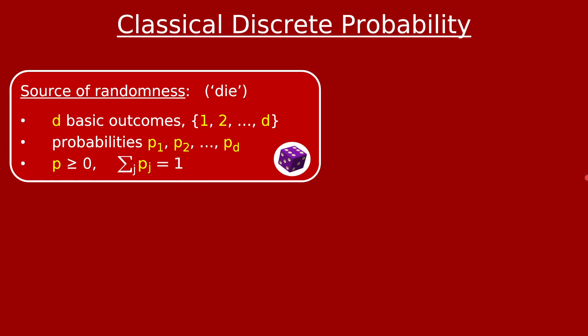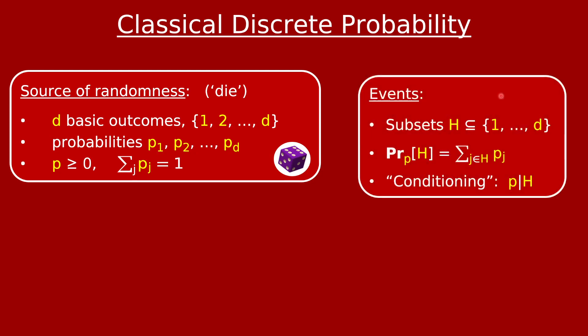Now another basic object in classical discrete probability is an event. An event is nothing more than just a subset h of the outcomes 1 through d. And an event has a probability associated to it — that's the sum of the pj's where j is in the subset h. And there's also a notion of taking your die, your source of randomness, and conditioning it on the event h occurring. There's a formula for how the new probability distribution looks, which I assume you've seen before, so I won't write it down here.